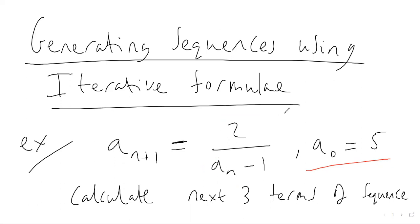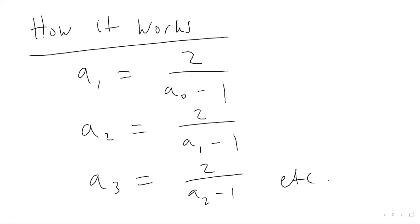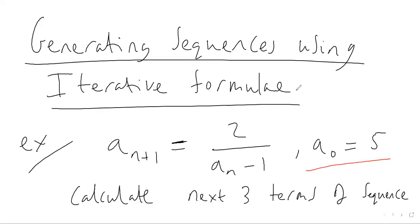So that's how an iteration works — it's generating numbers within a sequence using the iterative formula. We have a brief example: calculate the next three terms in the sequence. Your next number is two divided by your previous number take away one, and you keep repeating this process.